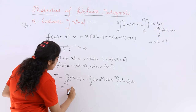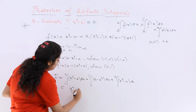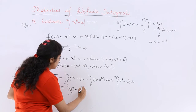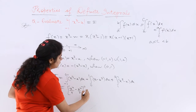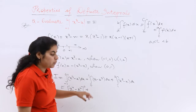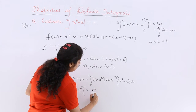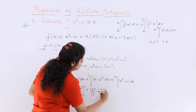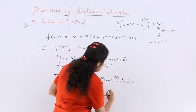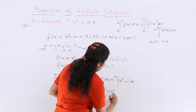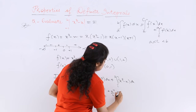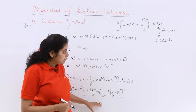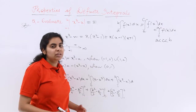Plus from 1 to 2, we again have (x³ - x) dx. Now simply integrate and put the limits. The antiderivative gives x⁴/4 - x²/2, evaluated from -1 to 0; then x²/2 - x⁴/4, evaluated from 0 to 1; and x⁴/4 - x²/2, evaluated from 1 to 2.